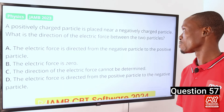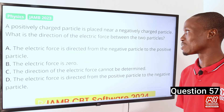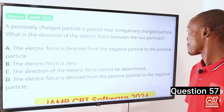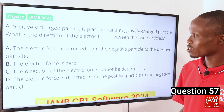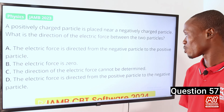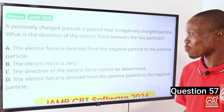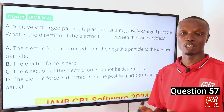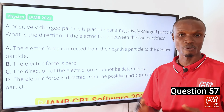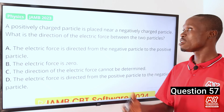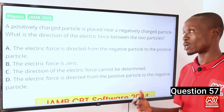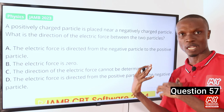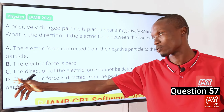Question 57. A positively charged particle is placed near a negatively charged particle. What is the direction of the electric force between the two particles? According to the fundamental law of electrostatics — like charges repel while unlike charges attract — the electric force will be directed from the positive particle towards the negative particle. So that makes option D the correct option: the electric force is directed from the positive particle to the negative particle.